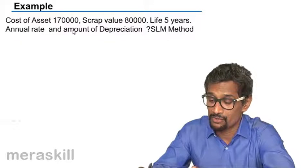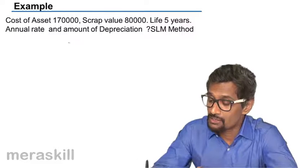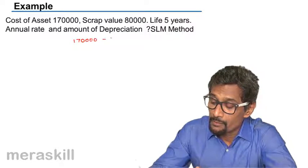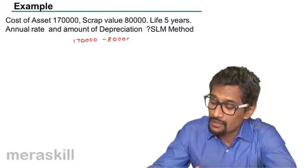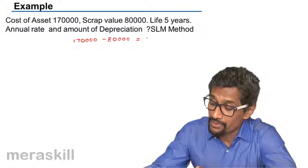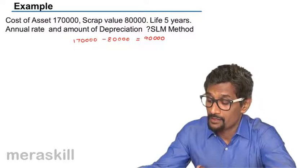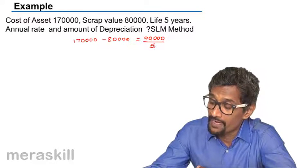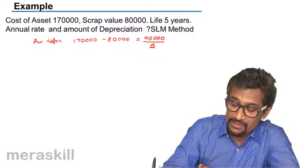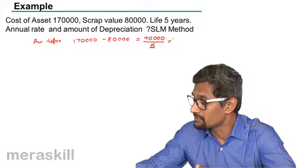So what do you have? Cost minus scrap: 1,70,000 minus 80,000. So that turns out to be 90,000 is the depreciated value upon 5, which will give you the annual depreciation. 90,000 by 5, which will be 18,000 is the annual depreciation.